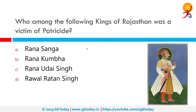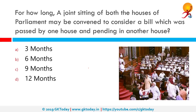Which among the following kings of Rajasthan was a victim of patricide? Patricide means killing of your own father. Rana Kumbha was killed by his son Udai Singh I. His achievements however continue to inspire successive generations of Indians.